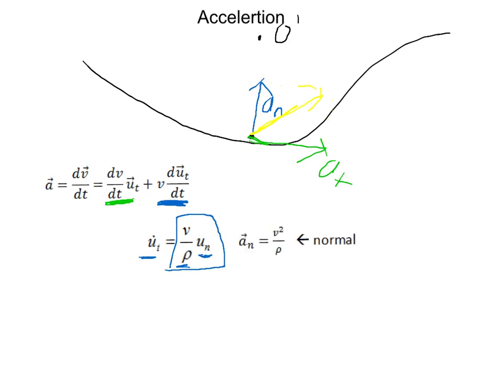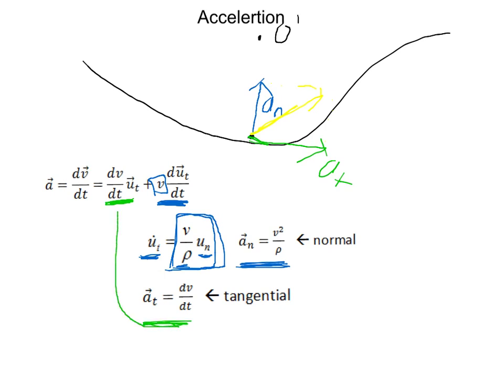So a sub n in the normal direction equals that because we have velocity over rho times u sub n times v, because we have u sub t with respect to time times v. And then in the tangent direction, you have this. You can see how they're related. Put them together and you end up with that.